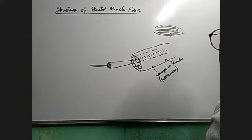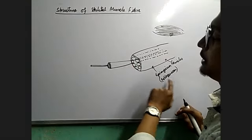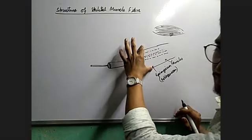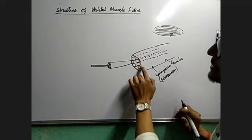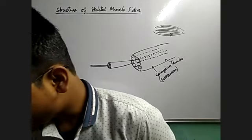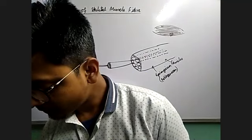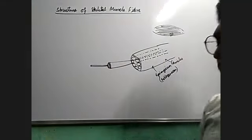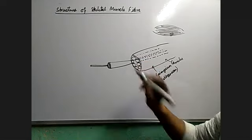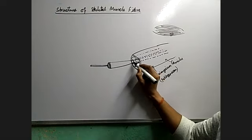Now, if you observe it more clearly, then we will see that inside this is the muscle bundle. Inside the muscle bundle we can find muscle fibers — these are muscle fibers, or muscle cells.